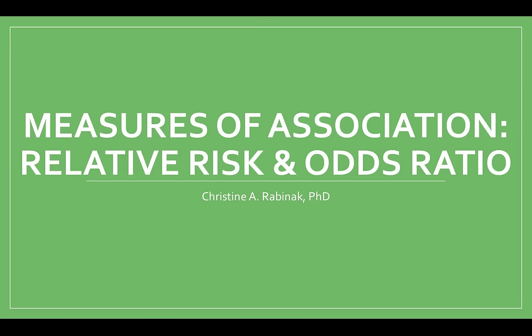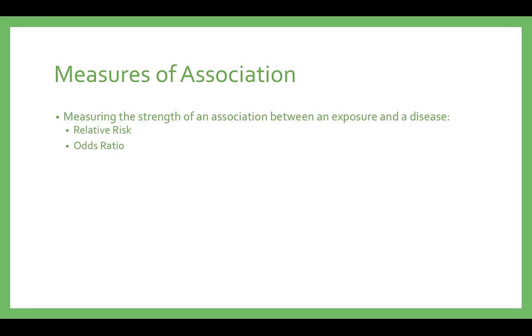Hello, this video will introduce relative risk and odds ratio and how they are calculated. Throughout the class, we have discussed comparing the occurrence of events between two groups. Studies can characterize these associations by using one of two statistics: relative risk or odds ratio.